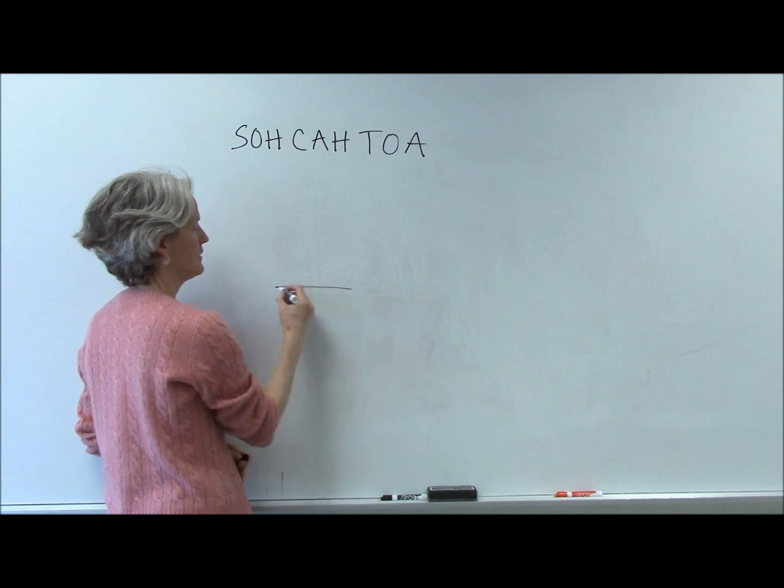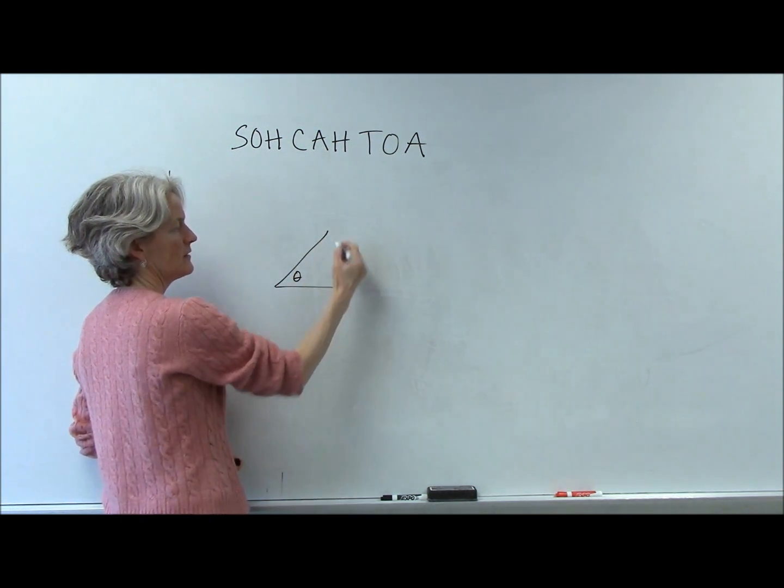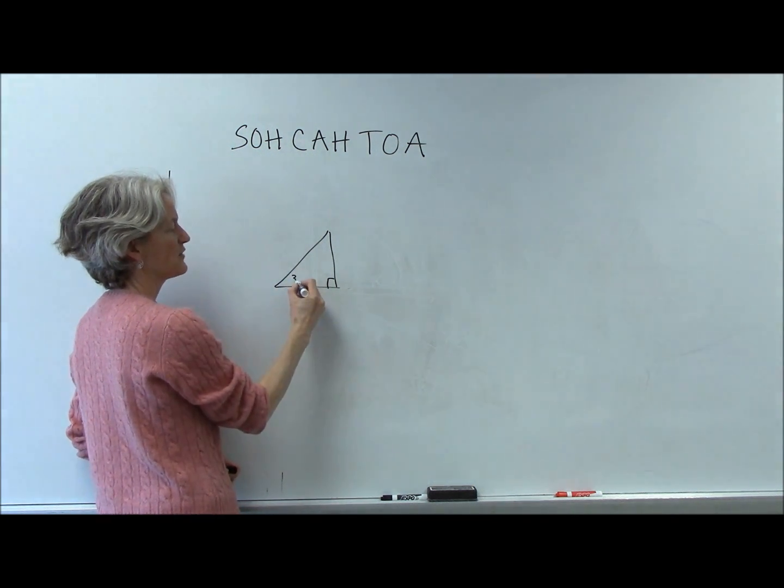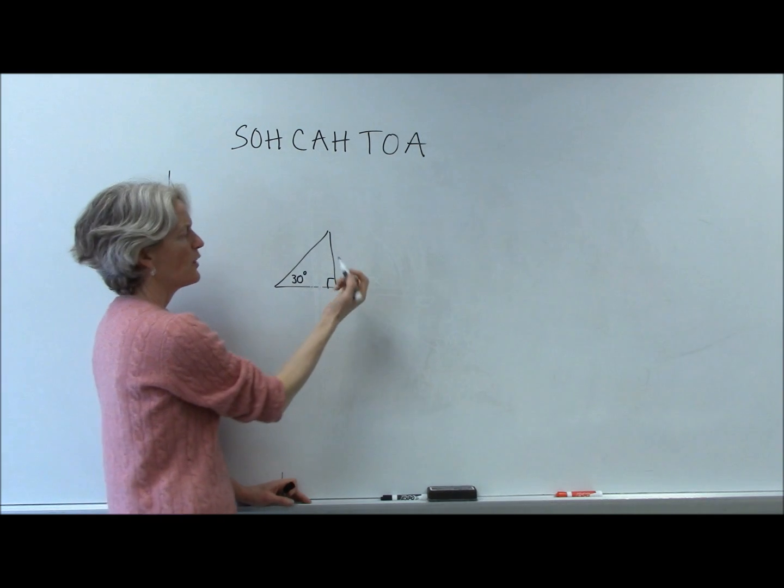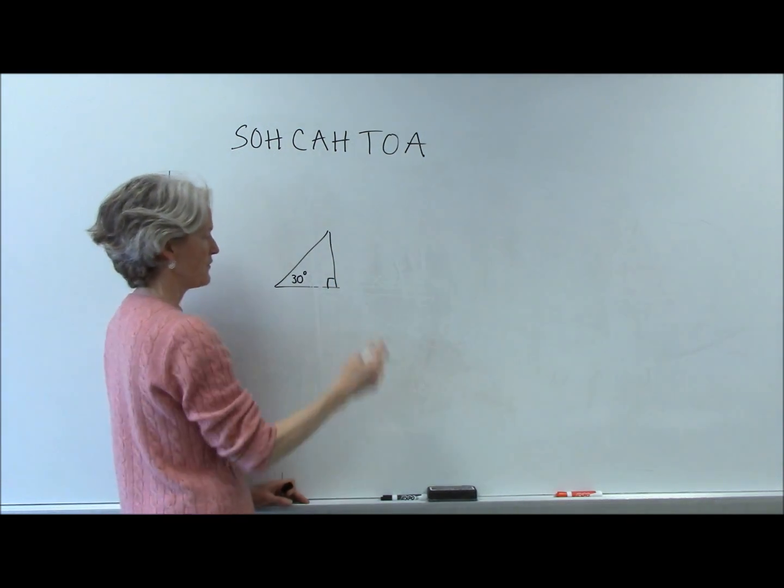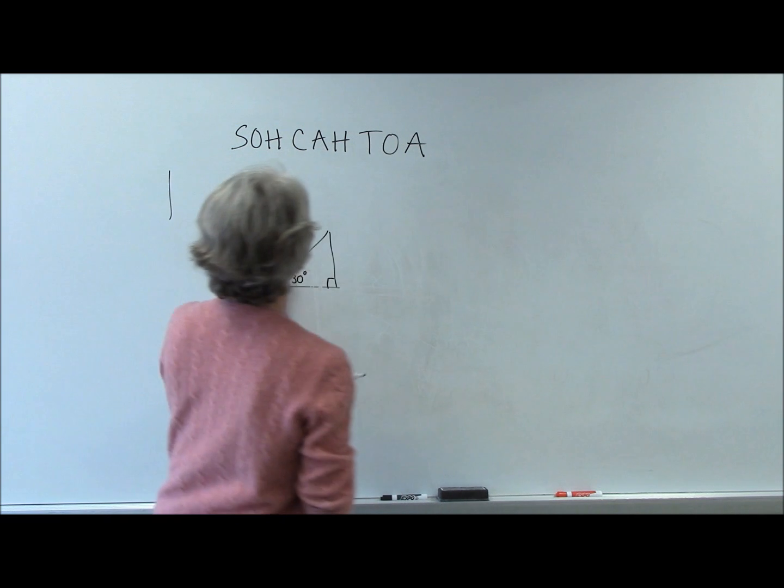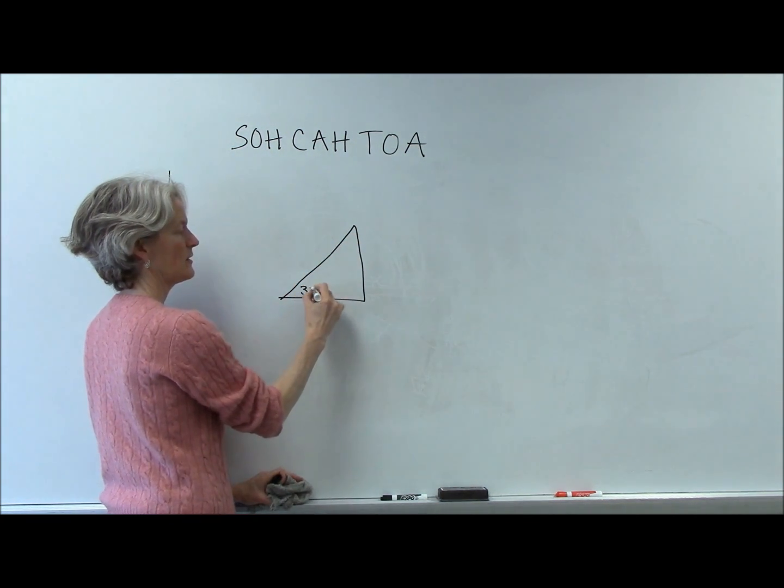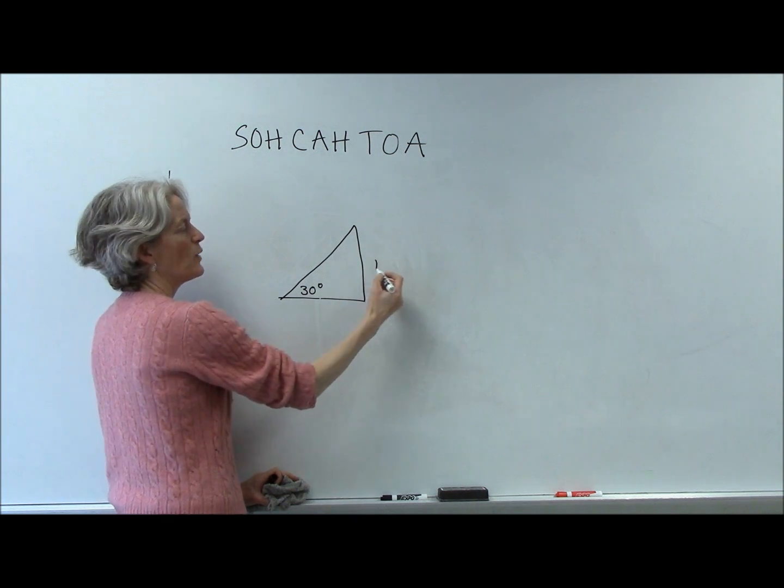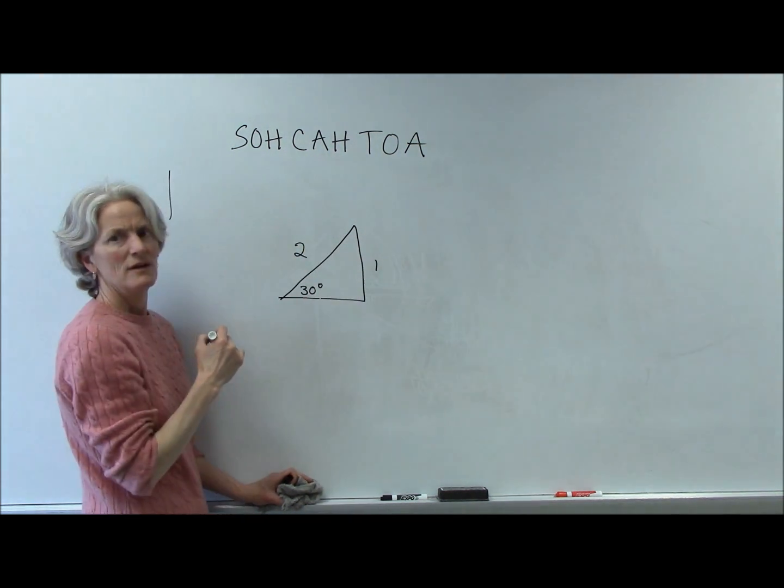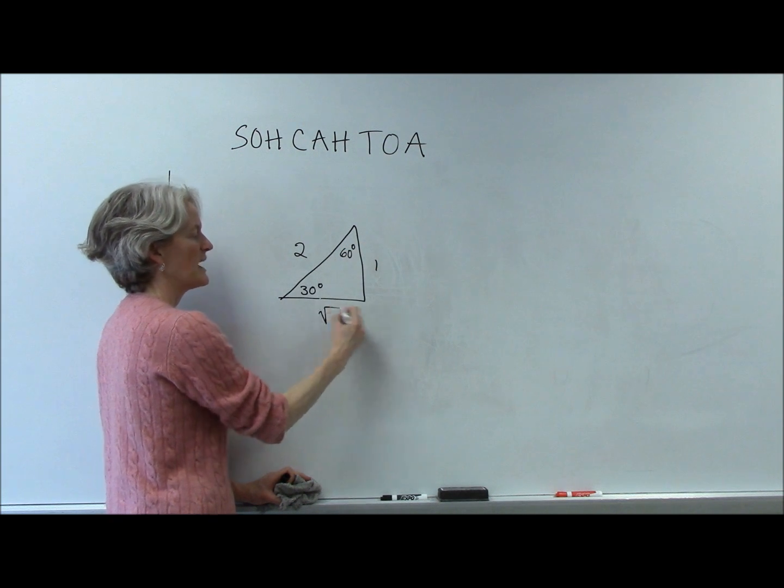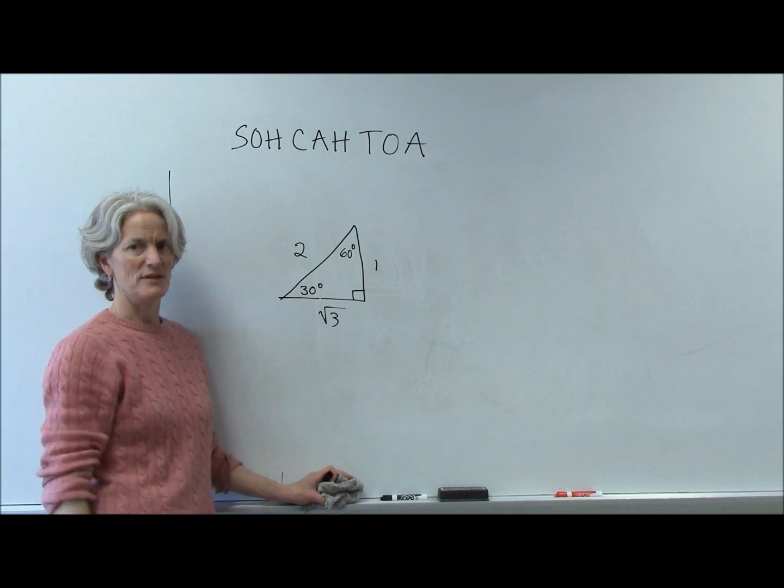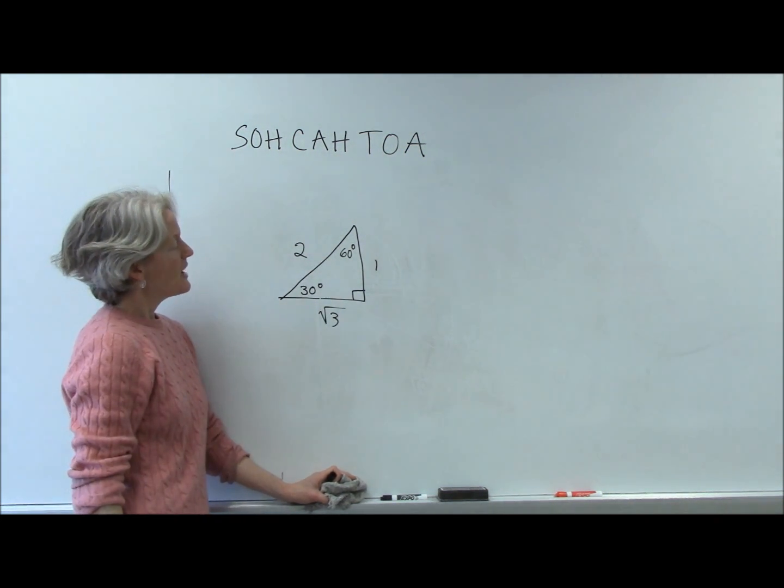I mean, if I have an angle, so let's use Soh Cah Toa, and let's say this is 30 degrees. So this is stuff that you've all done before, and that's really not drawn to scale, is it? Let's try to make it look a little more 30 degrees-ish. So let's say this is 1, and this is 2, and this would be square root of 3. I happen to know that that's a relationship in a 30, 60, 90 triangle. Some of you may remember this from geometry.